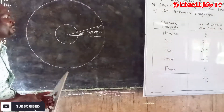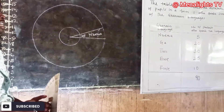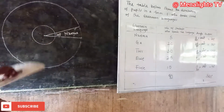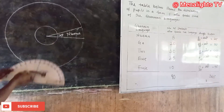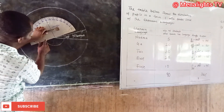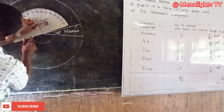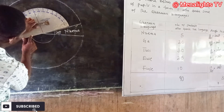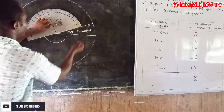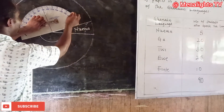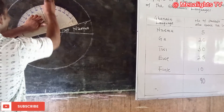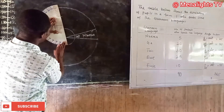The next language is Ga, which has an angle of 80 degrees. We place the protractor with the baseline on the line and the center line at the center, then count from 0 to 80: 0, 10, 20, 30, 40, 50, 60, 70, 80. We mark it and draw the line. That section represents Ga.